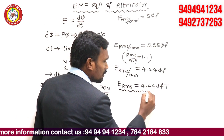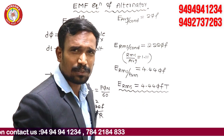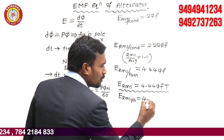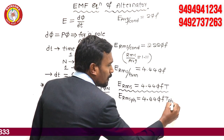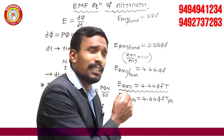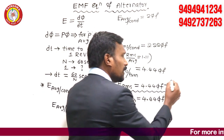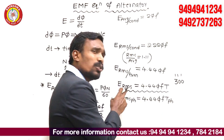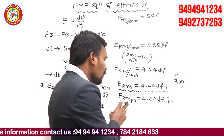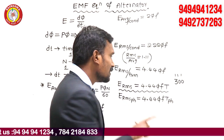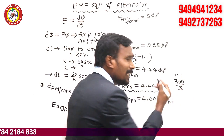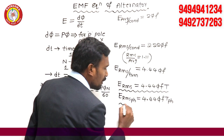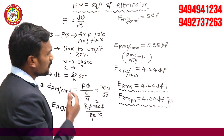This is the total E RMS value. If you want only for one phase, E RMS per phase equals 4.44ΦfT, where T is the turns per phase. For example, in my alternator I have 300 turns belonging to 3 phases. If you want total E RMS, take T = 300. If you want E RMS for a single phase, take T = 100 turns per phase. This is E RMS per phase.